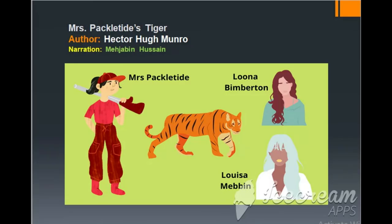Sometime later, Louisa Mabin's friends were surprised to discover that she had become the owner of a beautiful cottage in the English countryside and couldn't help wondering how she had managed it. Mrs. Packeltide, on her part, had changed her old habits — she no longer had any desire for hunting. If people asked her why she didn't shoot any more tigers, her reply was that it was a very expensive affair. The story ends here. I do hope that you have enjoyed it. Bye.